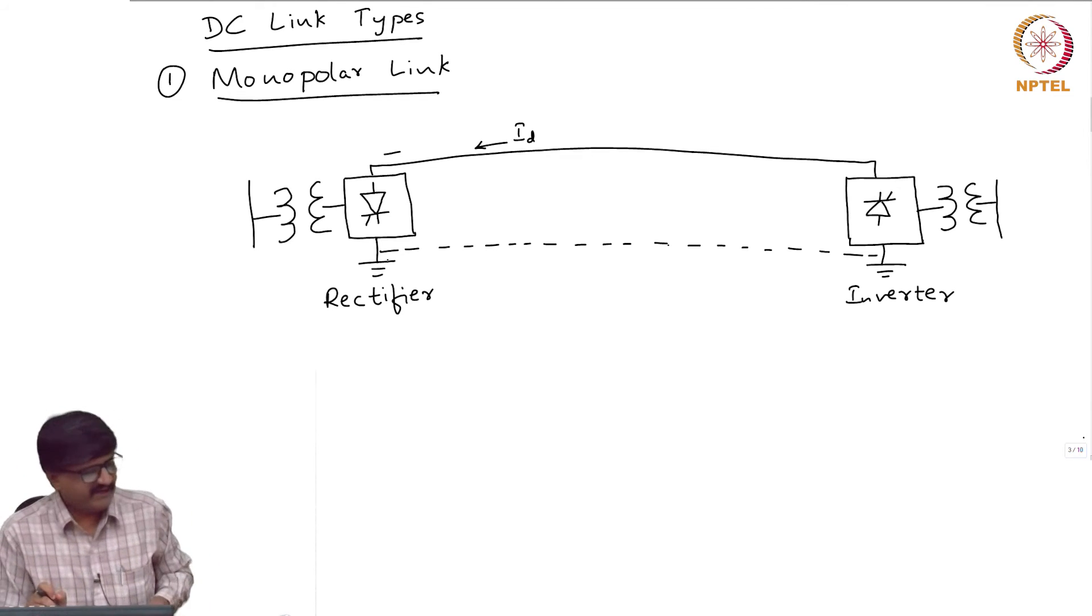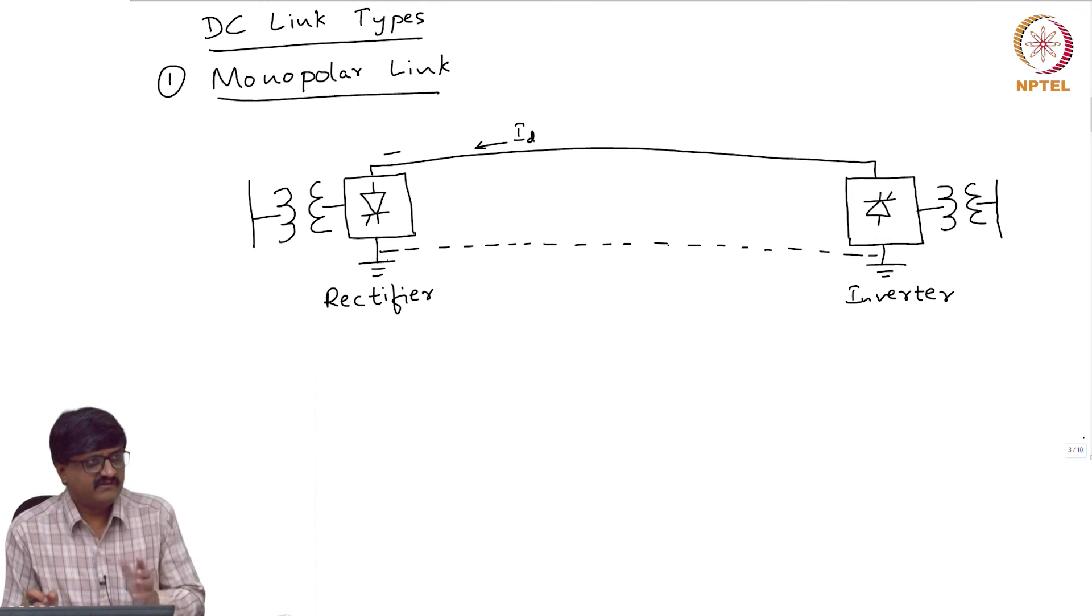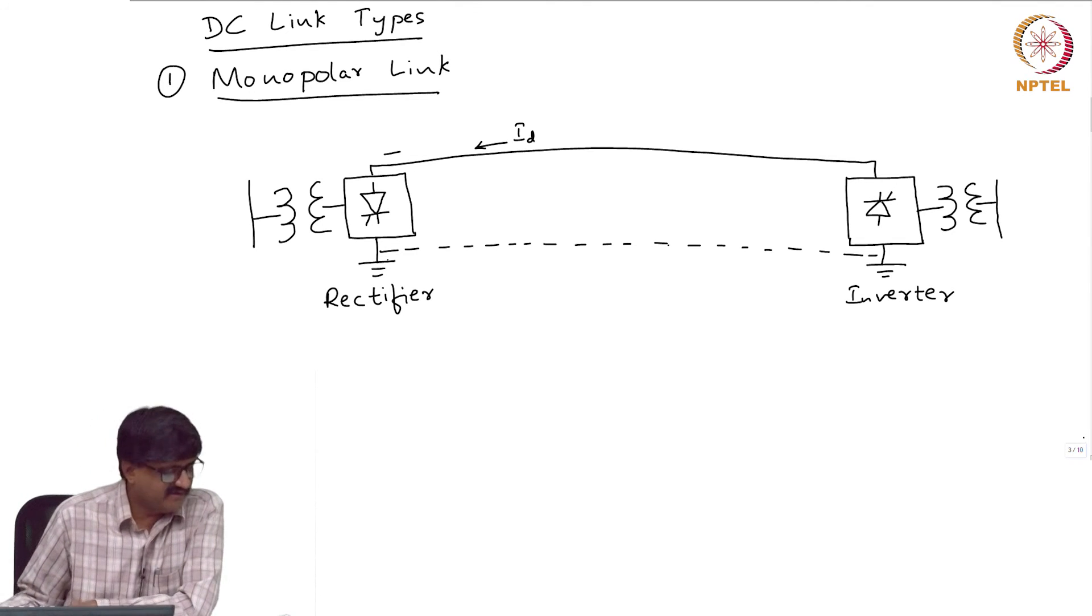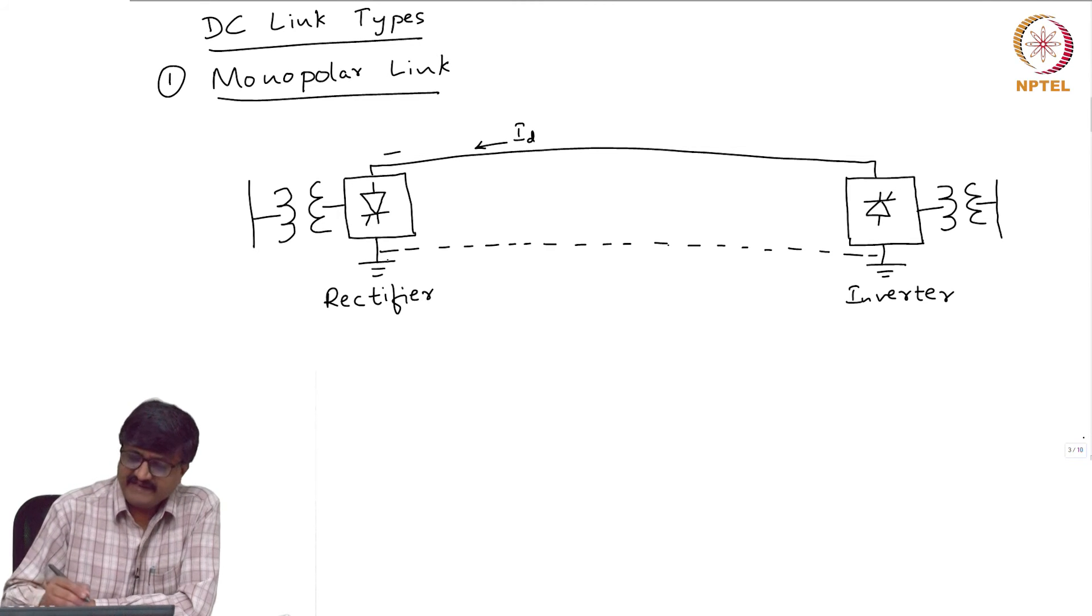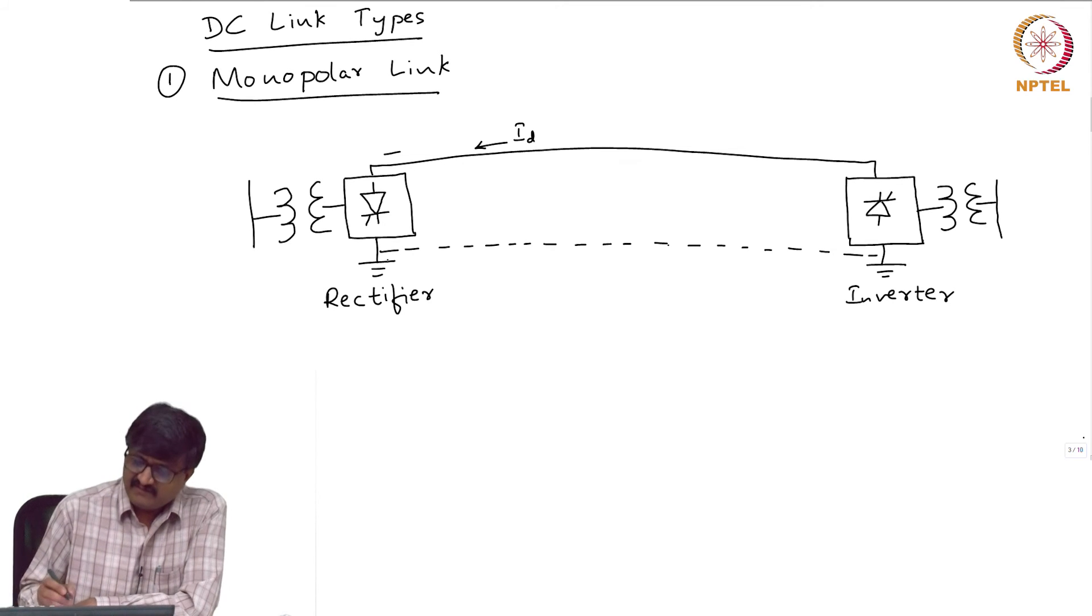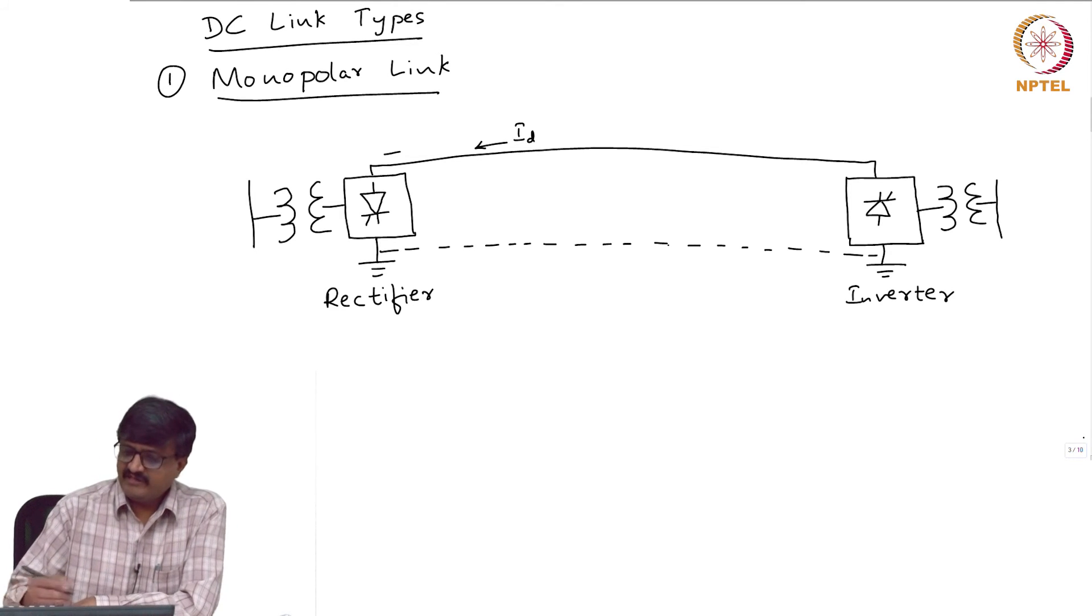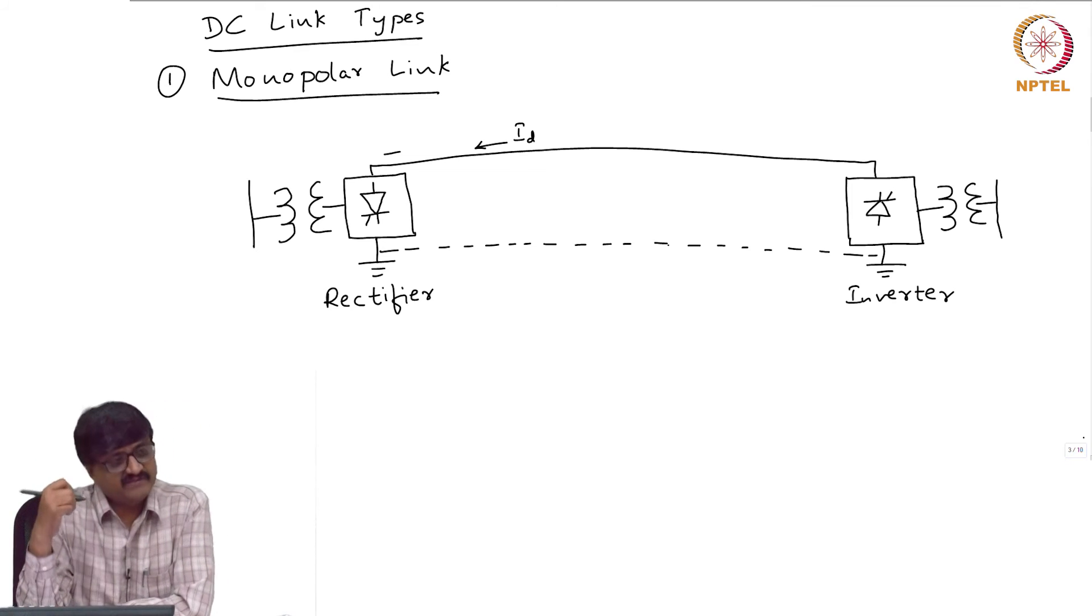Suppose the rectifier and inverter are actually away from each other. There is a distance of the order of say a few hundred kilometers between the rectifier and inverter. So there is only one conductor which is the negative terminal, or is only one conductor which is at the negative potential. The other terminal is actually grounded. Now, where should the current flow? If the current has to complete the path...